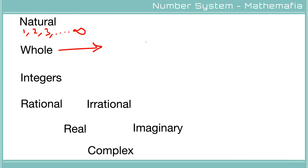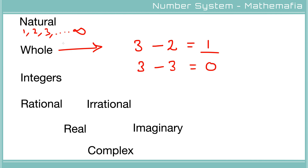Now let's talk about whole numbers. Consider this scenario: we have three chocolates and two kids, and we give one chocolate to each kid — three minus two means one chocolate is still left. If we have three chocolates and three kids, zero chocolates are left. But zero is not in the natural numbers list, so we need a new list — whole numbers — which starts with zero, one, two, three and so on. Every natural number is also a whole number.